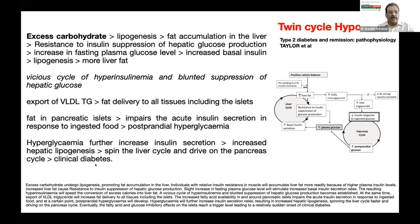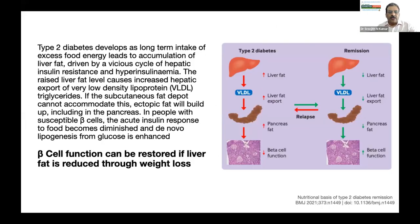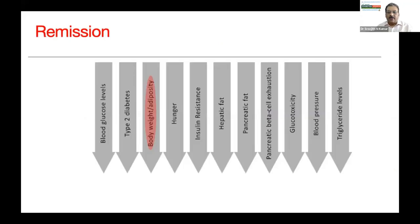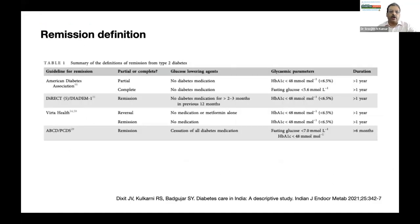All this started with excess carbohydrates. Excess fat in the liver and finally in the pancreas is driving decreased beta cell function and insulin resistance. But beta cell function can be restored if liver fat is reduced through weight loss. This cycle then gets reversed — decreased liver fat leads to decreased export of fat from the liver, decreased fat in the pancreas, and beta cell function gets restored. That calls for reducing body weight and adiposity, and that's what we call remission.